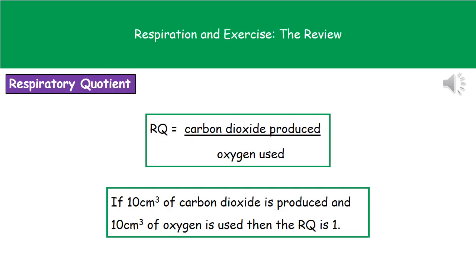We do have this thing called the respiratory quotient. The respiratory quotient, or RQ, equals the carbon dioxide produced divided by the oxygen used. So in a question, if they're asking you to calculate the respiratory quotient, they would tell you how much carbon dioxide is produced and how much oxygen is being used — you just divide the carbon dioxide by the oxygen and that gives you your respiratory quotient.